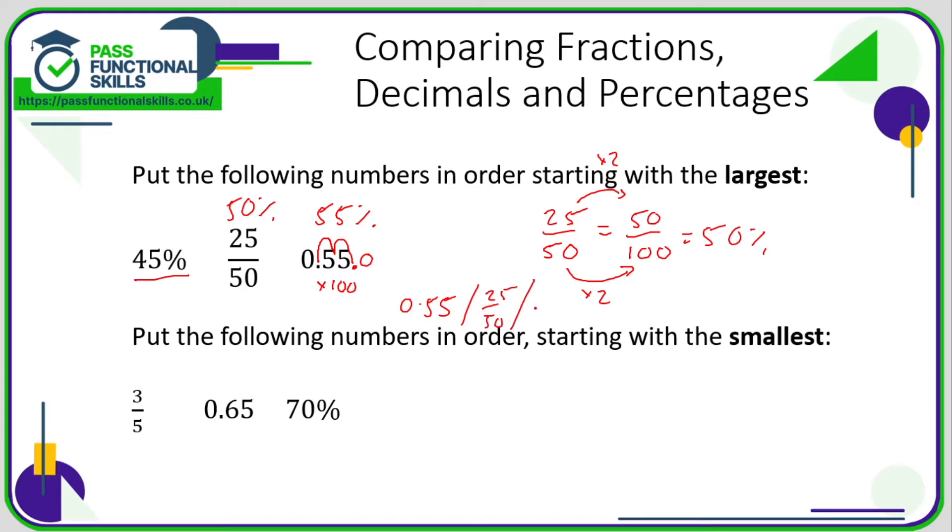For the second example, exactly the same process except we need to start with the smallest. So three out of five, I'm going to convert that into a percentage, which is an equivalent fraction out of 100. To turn a five into a 100, that is a calculation where we're multiplying by 20. So for an equivalent fraction, I'm going to need to multiply the top by 20 as well.